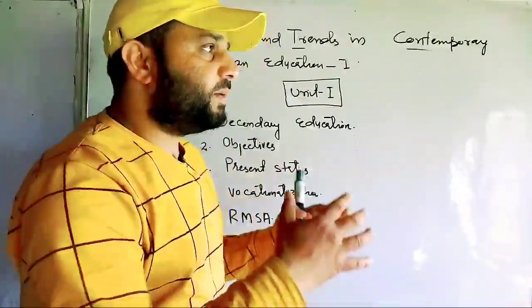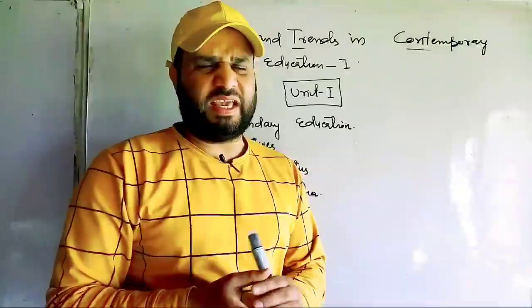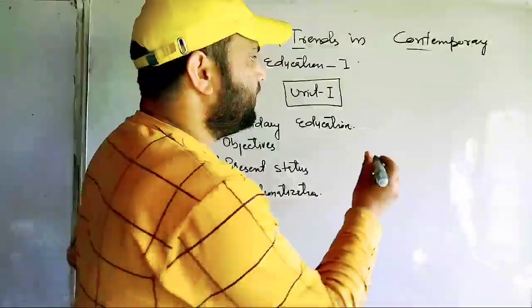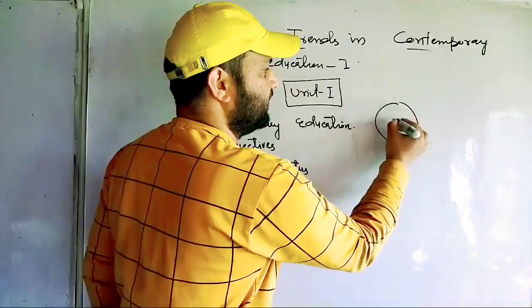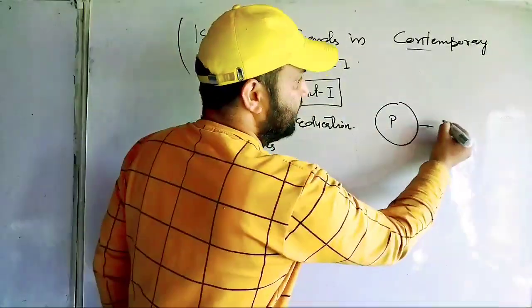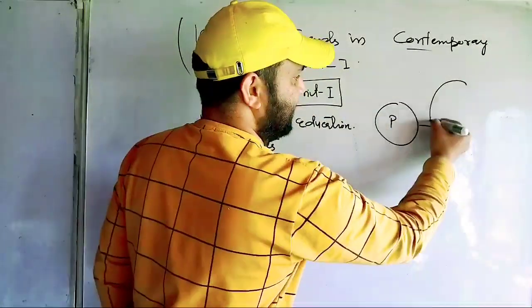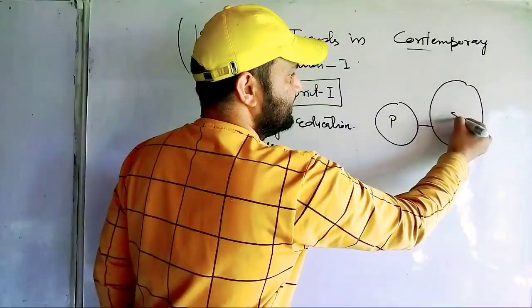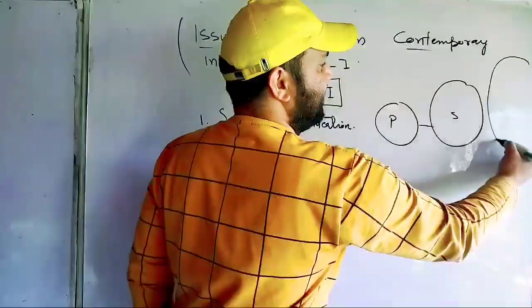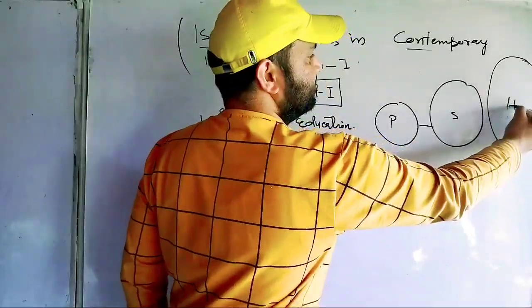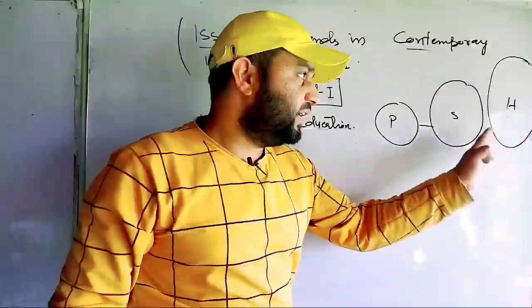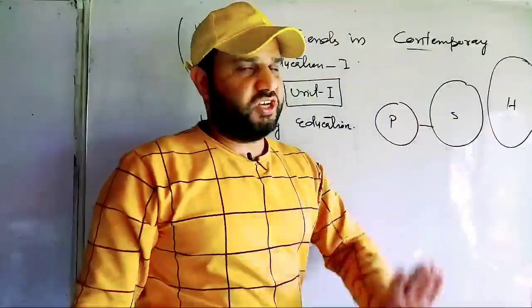So when we look at our structure of education, there are three things you have to remember. First, you have the primary structure. Then after that, you have the secondary structure. And then you have higher education — also called tertiary education.